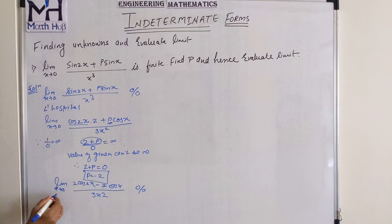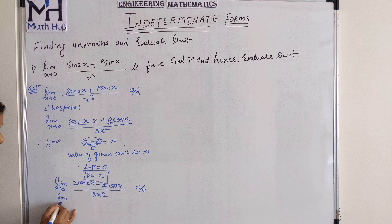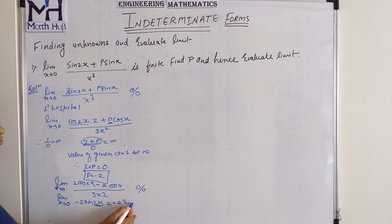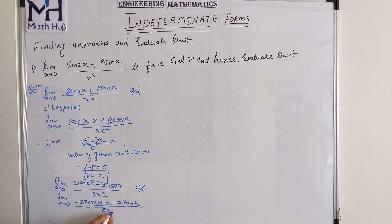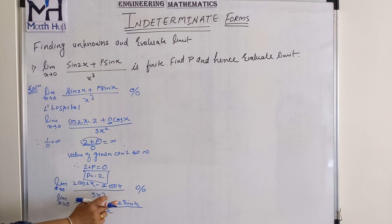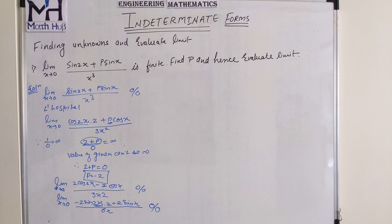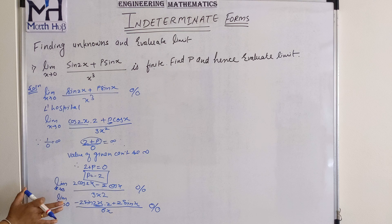Now since we have indeterminate form again, we apply L'Hospital rule. Differentiating the numerator: derivative of 2·cos 2x is minus 4·sin 2x, and derivative of minus 2·cos x is plus 2·sin x. Denominator: differentiation of 3x squared is 6x. Again put the limit — sin(0) = 0 at both terms, denominator also 0. We get 0 by 0 again. So we apply L'Hospital rule as many times as we keep getting indeterminate form.